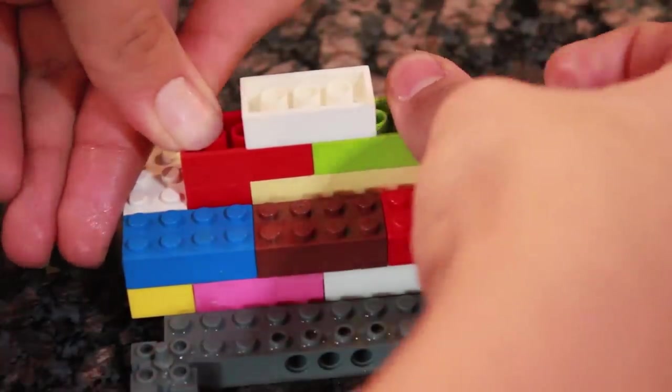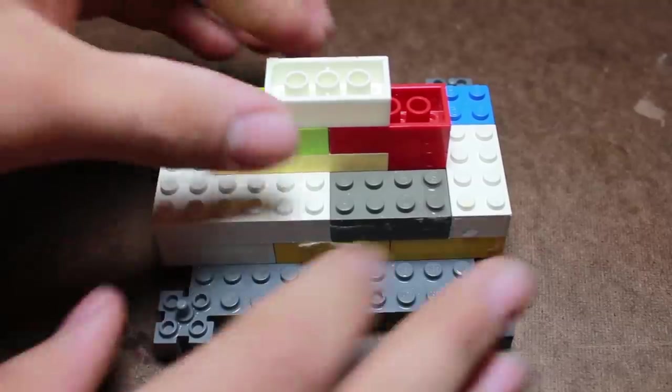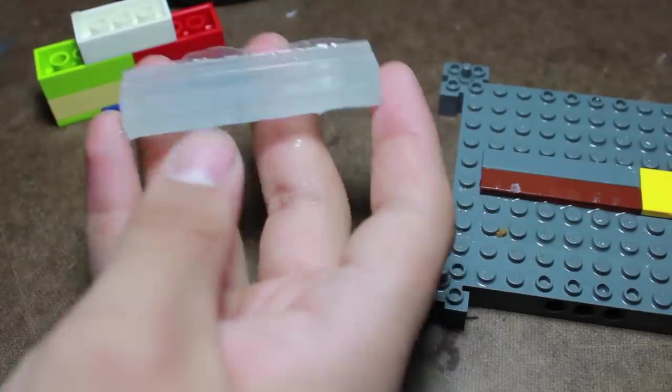Now one thing to note is that once you push down your push block, you're going to want to leave it there while the second half dries, because if you pull it out immediately, you could end up deforming the top mold a little bit.